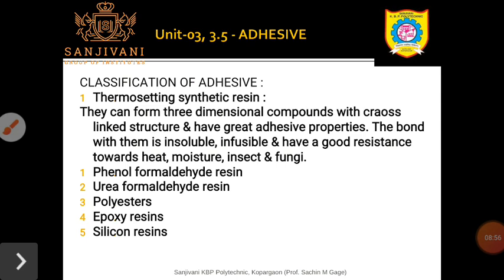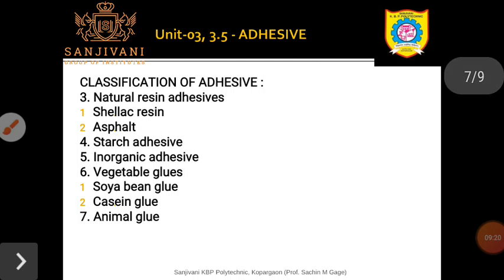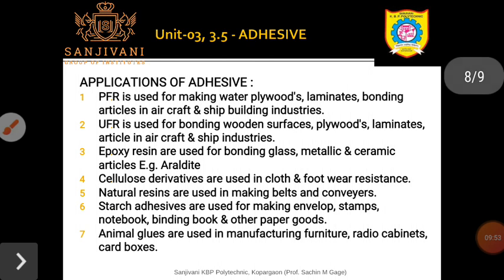Examples of thermoplastic resin adhesives include cellulose derivatives such as cellulose acetate, ethyl cellulose, acrylics, and polyvinyls. Natural resin adhesives include shellac resin used in varnishes, prepared from the saliva of insects, and asphalt used for bonding purposes. Starch adhesives are the fourth type, inorganic adhesives are the fifth, vegetable glues such as soybean glue and casein glue are the sixth, and animal glues are the seventh type.